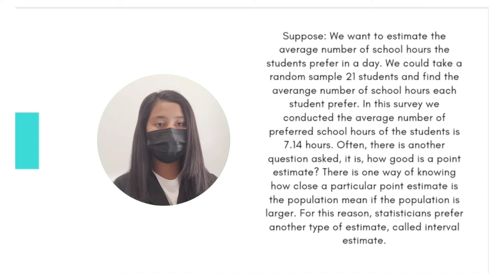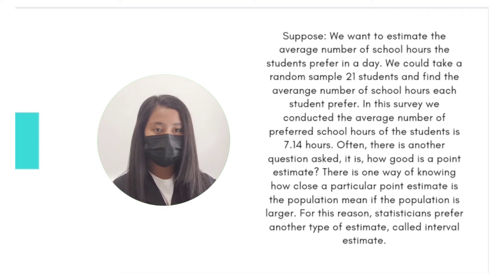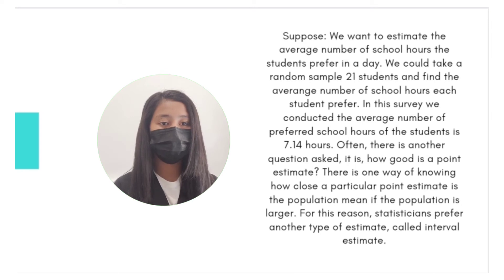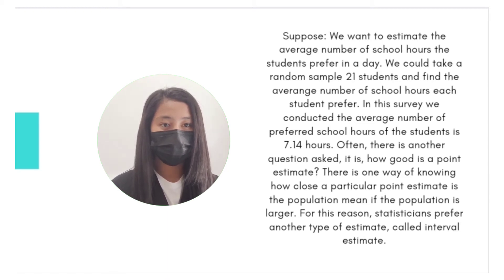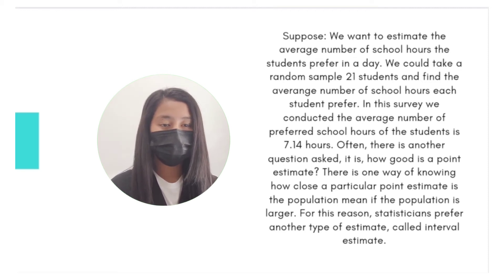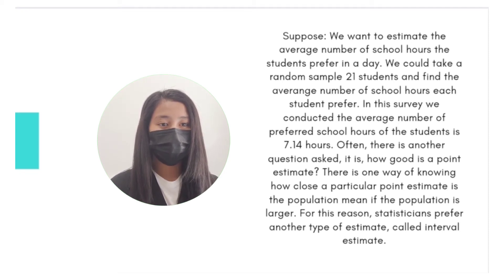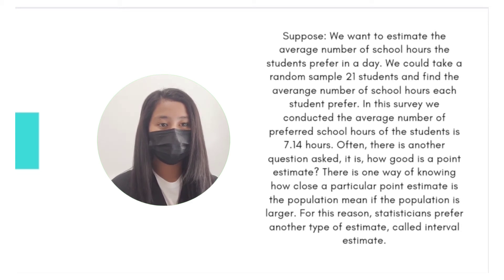Suppose we want to estimate the average number of school hours students prefer in a day. We could take a random sample of 21 students and find the average number of school hours each student prefers. In this survey, the average number of preferred school hours was found to be 7.14 hours. One way of knowing how close a point estimate is to the population mean — especially when the population is larger — is why statisticians prefer another type of estimate called interval estimate.